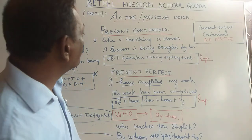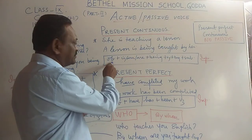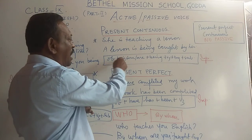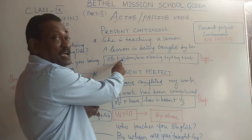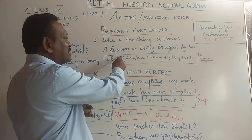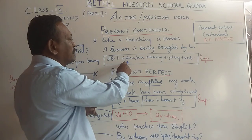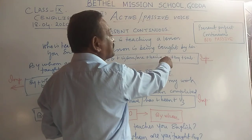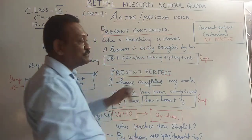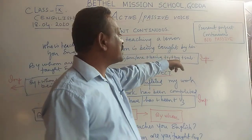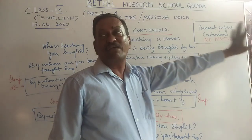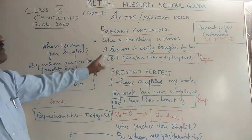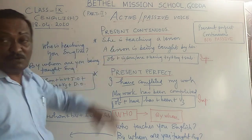This is exactly the formula. 'A lesson' is the object; the object is singular, so I use the helping verb 'is' — a singular verb — plus 'being' plus the past participle of 'teach' (V3), then 'by', and finally the subject. This is exactly the formula for present continuous passive.